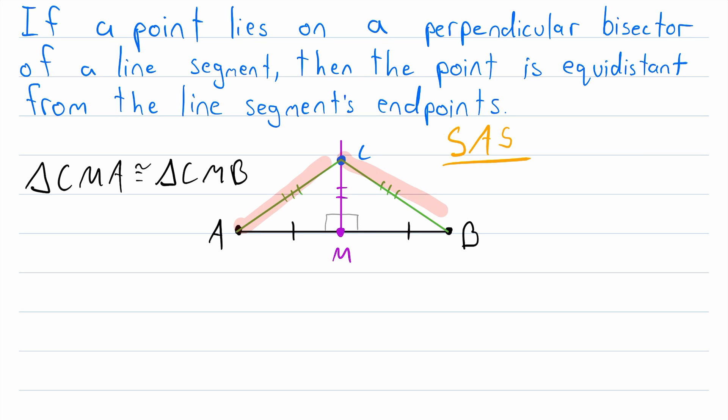And that, my friends, is the conclusion we need to prove the theorem. Since the line segment CA is congruent to the line segment CB, we know that C is equidistant from the endpoints A and B.